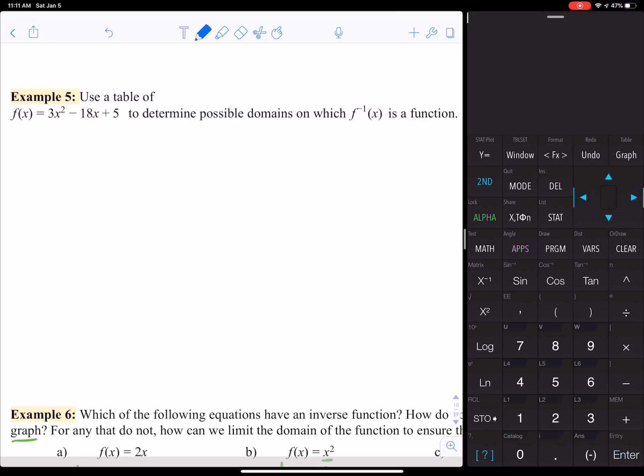So let's make a table. x and f(x), and we're going to type it in the calculator to get our values. So over here, I'm going to go to y equals and type in 3x² - 18x + 5. Go to second graph to look at the table. And then I'm going to write down those values and take a look at what happens.